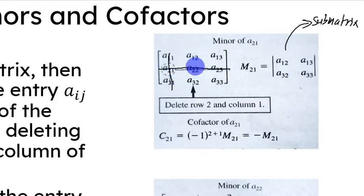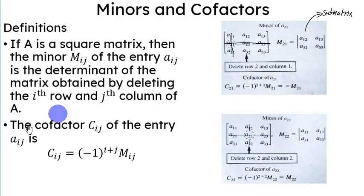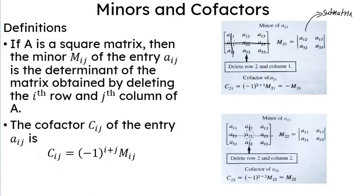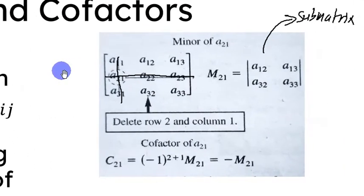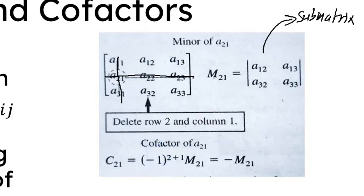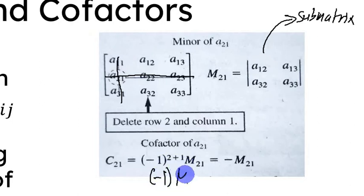Each entry will have its specific minor. A cofactor C sub ij of the entry A sub ij is given by the formula: negative 1 raised to i plus j, multiplied by the minor M sub ij of that entry. So the cofactor involves negative 1 multiplied by the minor M sub 2 1, resulting in the cofactor value. That is how we get minors and cofactors.